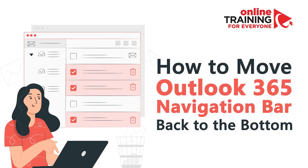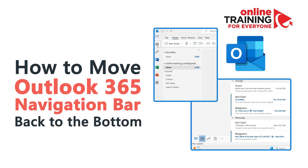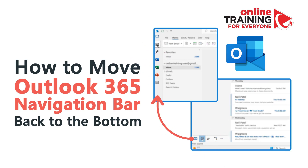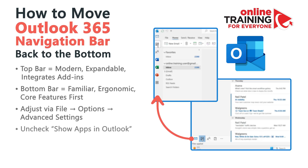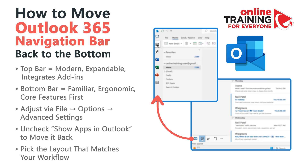Very often, you'll find yourself needing to navigate quickly between mail, calendar, contacts, and tasks in Outlook. In recent updates, Microsoft moved the navigation bar from its traditional bottom position to the top left corner. This change was meant to create a consistent experience across all Microsoft 365 apps, but not everyone finds it helpful.